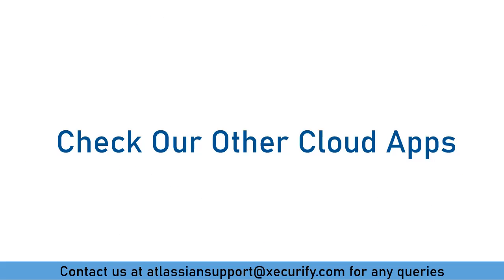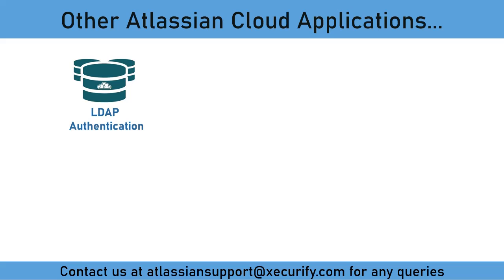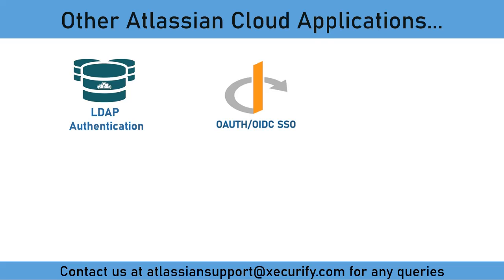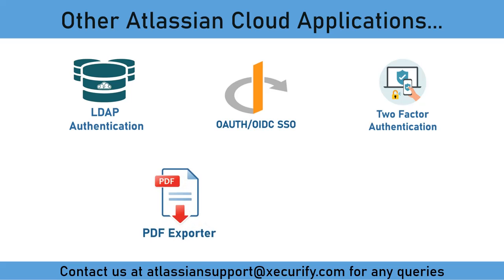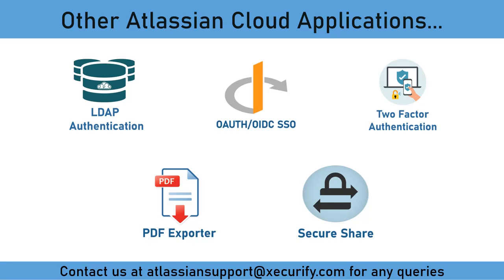You can check our other Atlassian apps. The LDAP Connector provides user authentication from various external directories for Atlassian Access. The Auth OIDC App allows users to log in to Atlassian Cloud with OAuth and OpenID Connect. Use two-factor authentication for secure login to your Atlassian Cloud applications. The PDF Exporter App gives the ability to export Jira issues in standard business document formats like PDF and Word. Create and share secure links for Jira issues and Confluence pages, allowing end-users to access them without login.